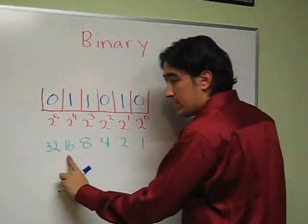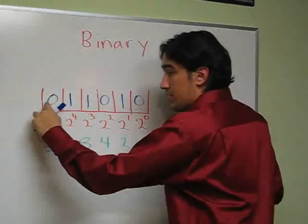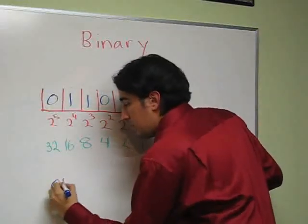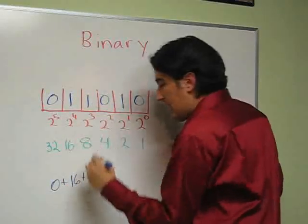This means that we have 0 times 32, plus 1 times 16, plus 1 times 8, plus 0 times 4, plus 1 times 2.